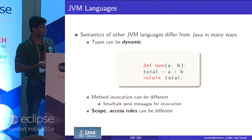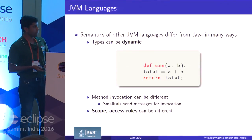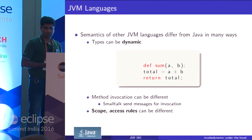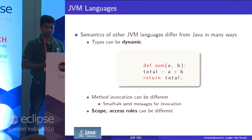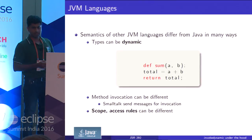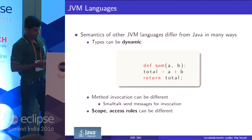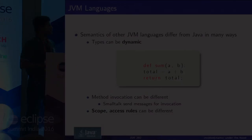If you pass float, it will be float type. That's basically dynamic typing — at runtime, you get the type. Then there are other differences...